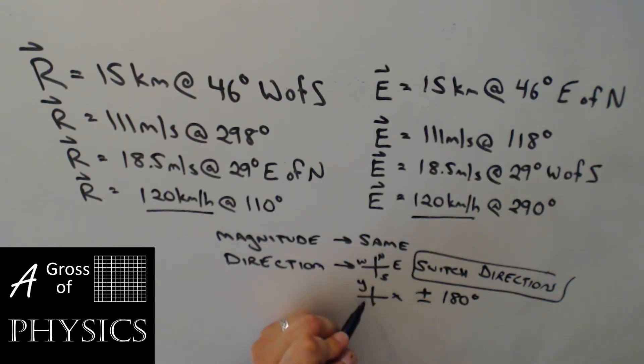If you're dealing with xy, it's plus or minus 180 degrees. If it's less than 180, you add 180. If it's greater than 180, you subtract. So the equilibrant is easy if you have the resultant. You just keep the same number of the magnitude, keep the units the same, and then switch the direction in the opposite direction. Resultants on the left, equilibrants on the right.